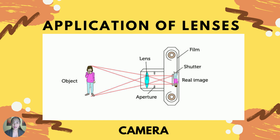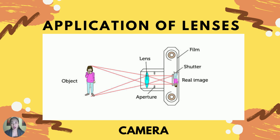Now let's proceed to lenses. Lenses produce images via refraction of light. There are two types: converging lens (convex lens) and diverging lens (concave lens). The first instrument we have is a camera, which is used to produce a permanent image. It has a biconvex lens producing a real, inverted, and smaller image.